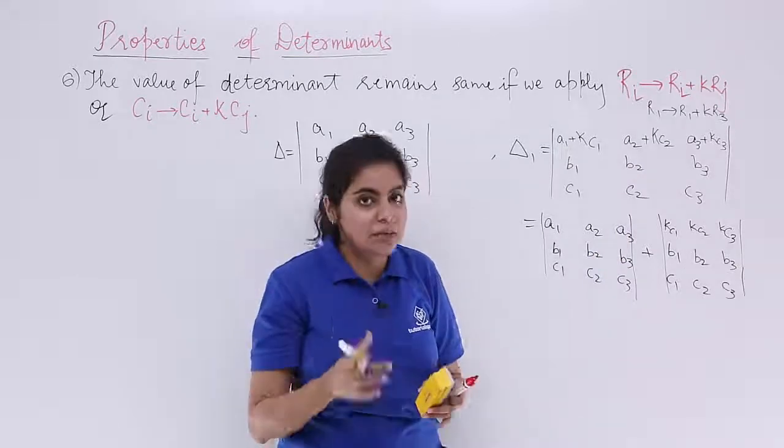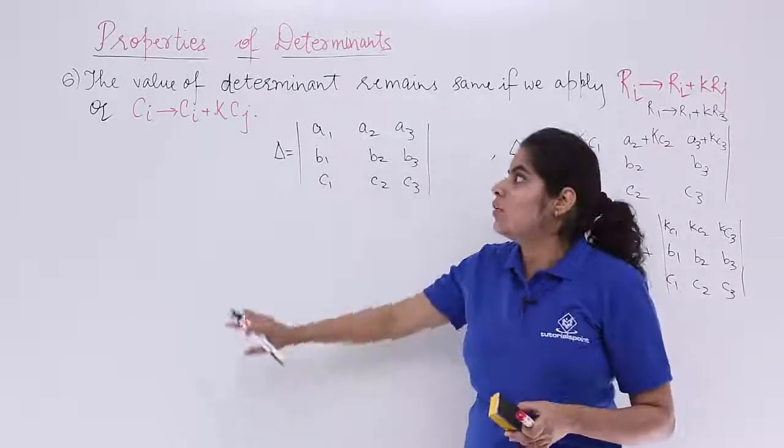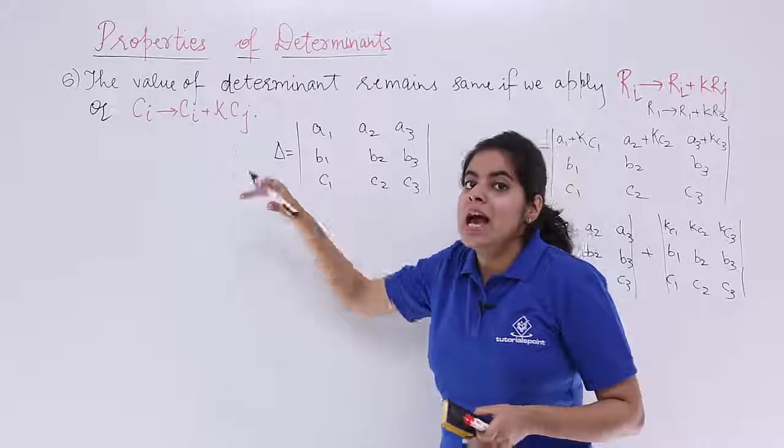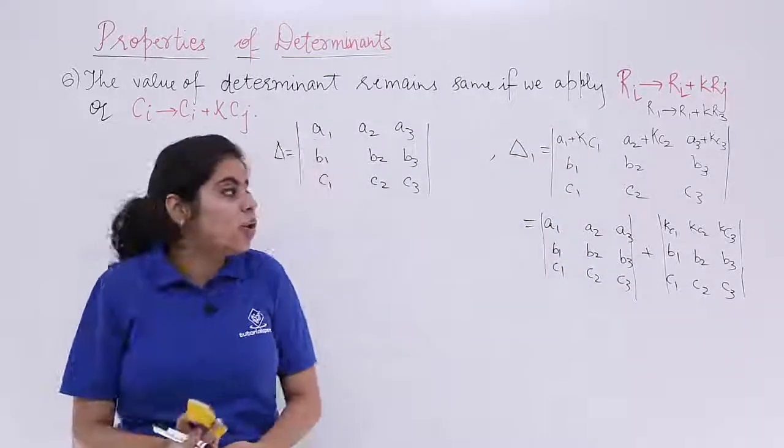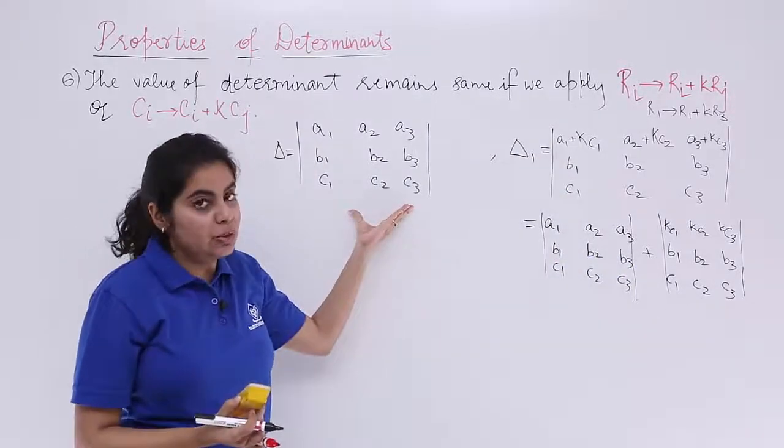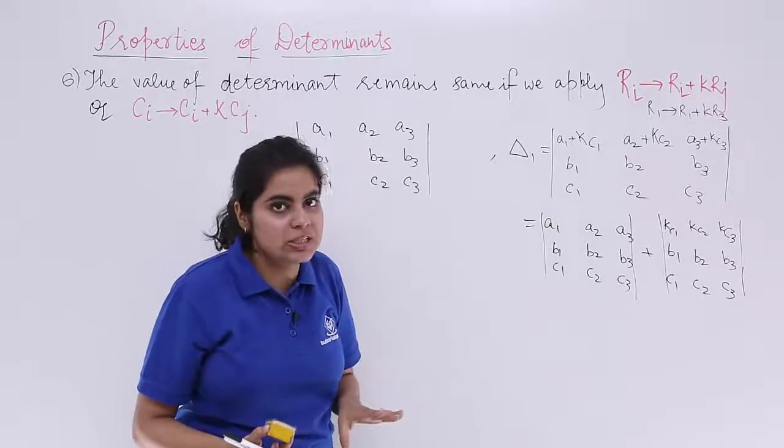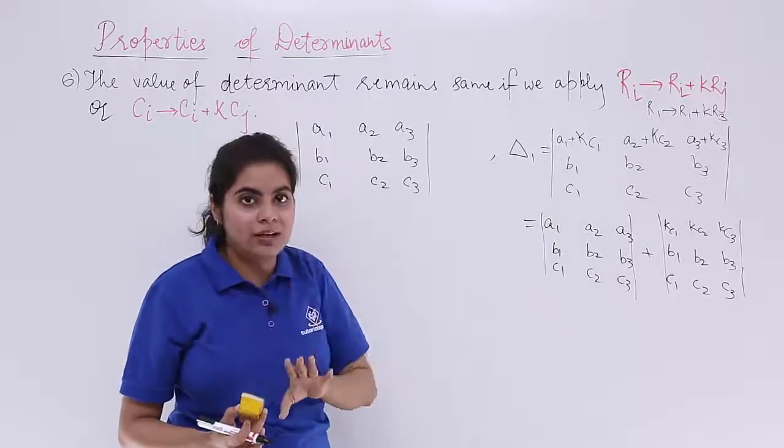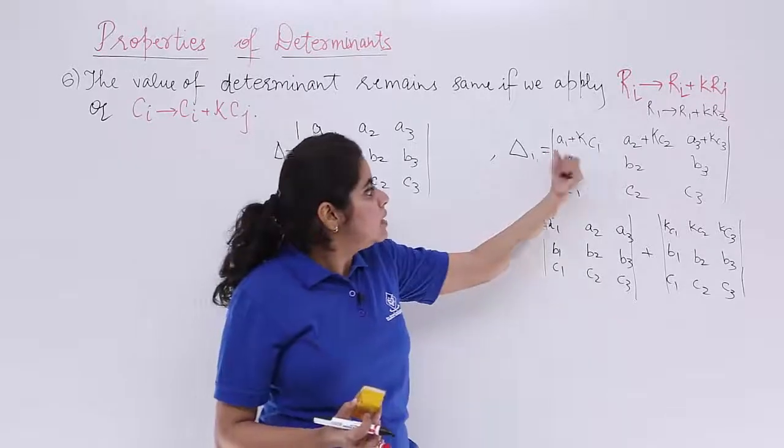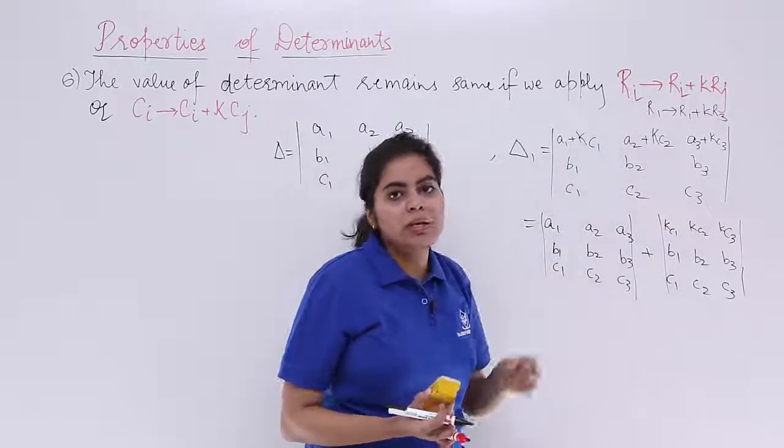What I have done is, let me repeat again. I am actually verifying this property number 6 and applying the use of it. So I have a determinant which is known as del. And del 1 is another wherein some modifications are done in row 1, R1. Now, splitting into two determinants is what we did.